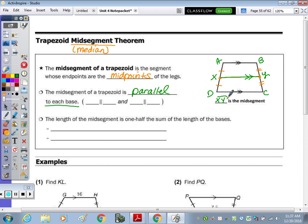We're a little late, I already labeled it. X, Y is the midsegment. That means that XY is going to be parallel to the upper base AB, and it's also going to be parallel to the lower base CD.